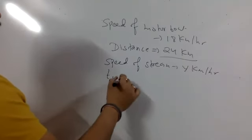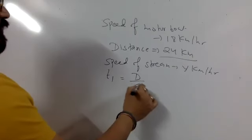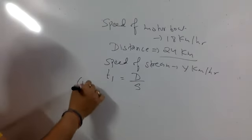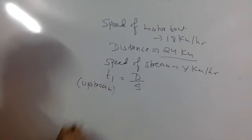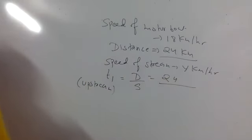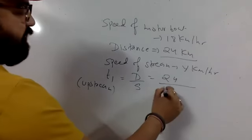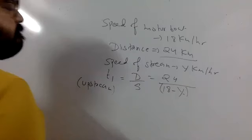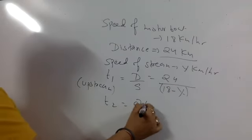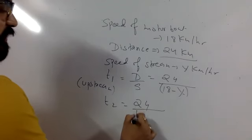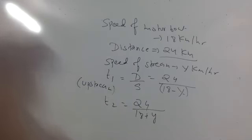Now T1, what is the formula of time? Distance upon speed. The time is my upstream, right? How much distance is it? 24 km. Now will you minus the speed from another one? T2, distance is the same, you are coming back there. Will your speed add?